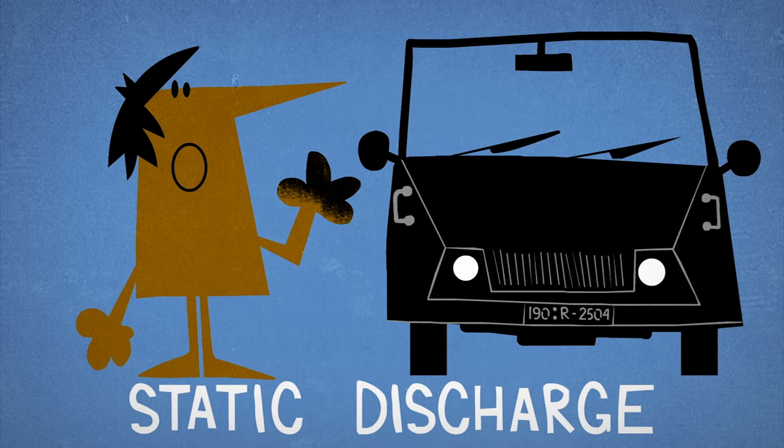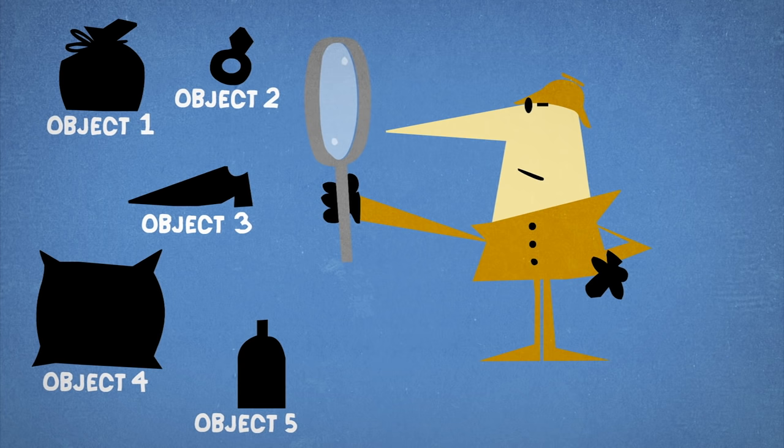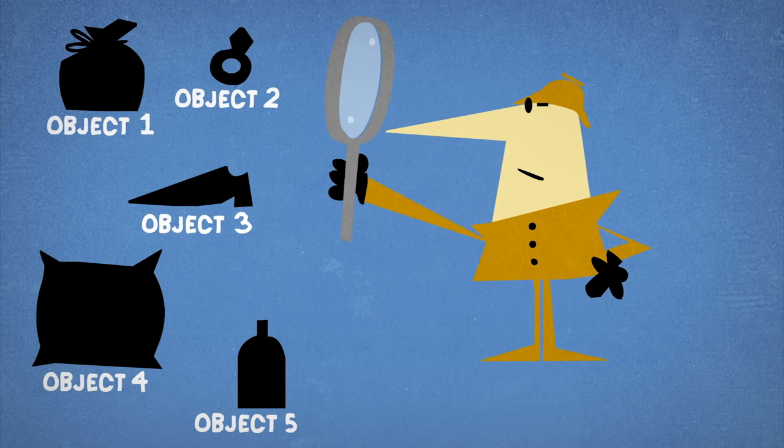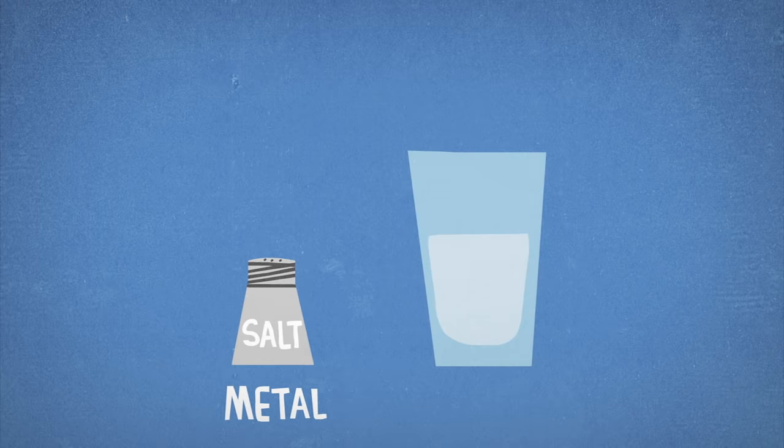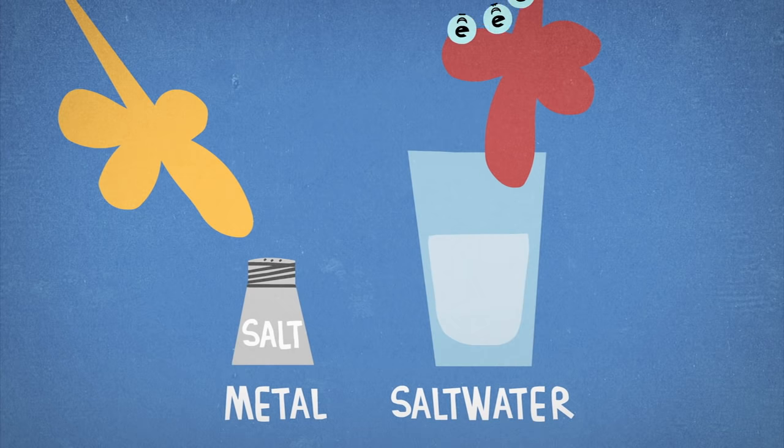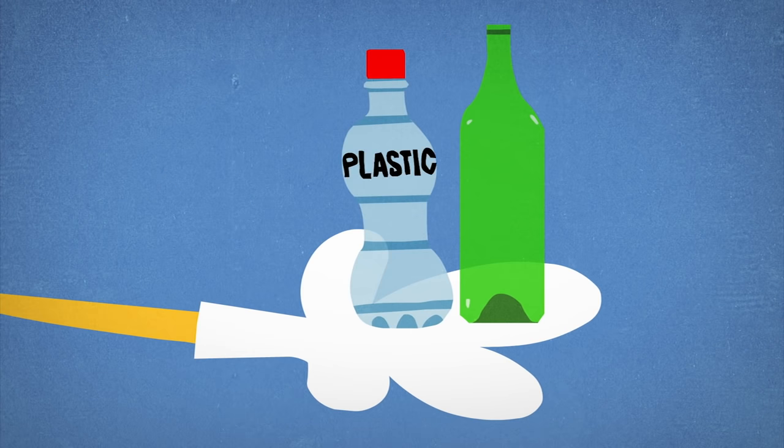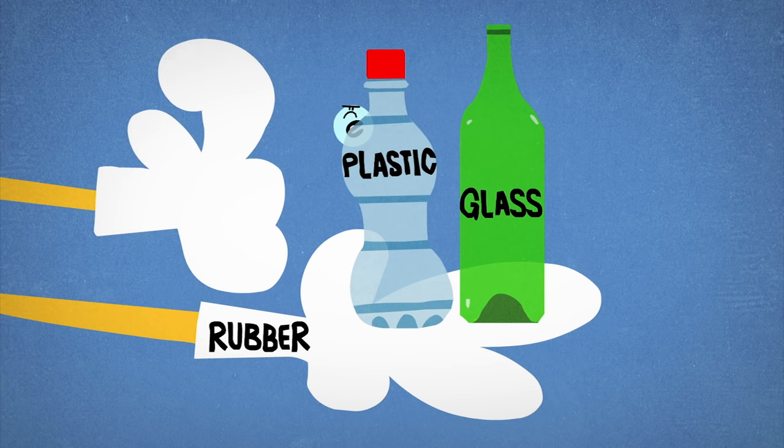This process doesn't happen with just any objects, otherwise you'd be getting zapped all the time. Conductors like metals and salt water tend to have loosely bound outer electrons which can easily flow between molecules. On the other hand, insulators like plastics, rubber, and glass have tightly bound electrons that won't readily jump to other atoms.